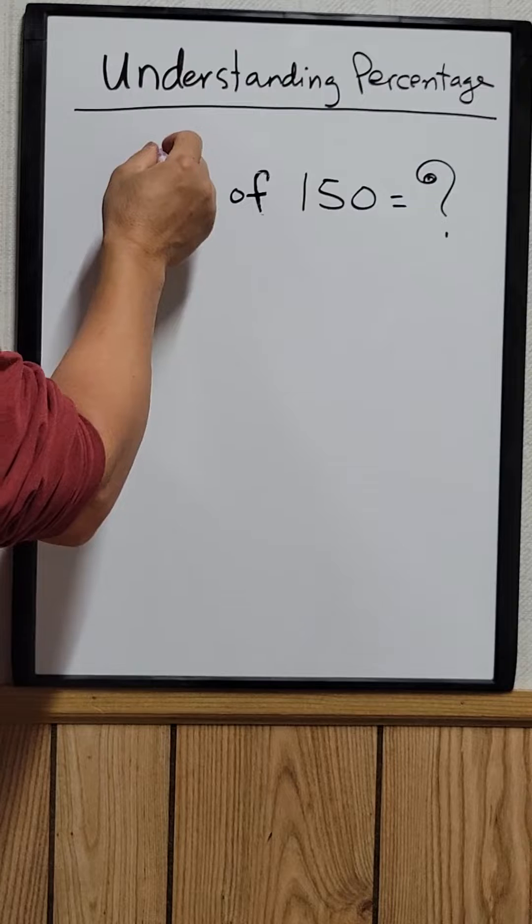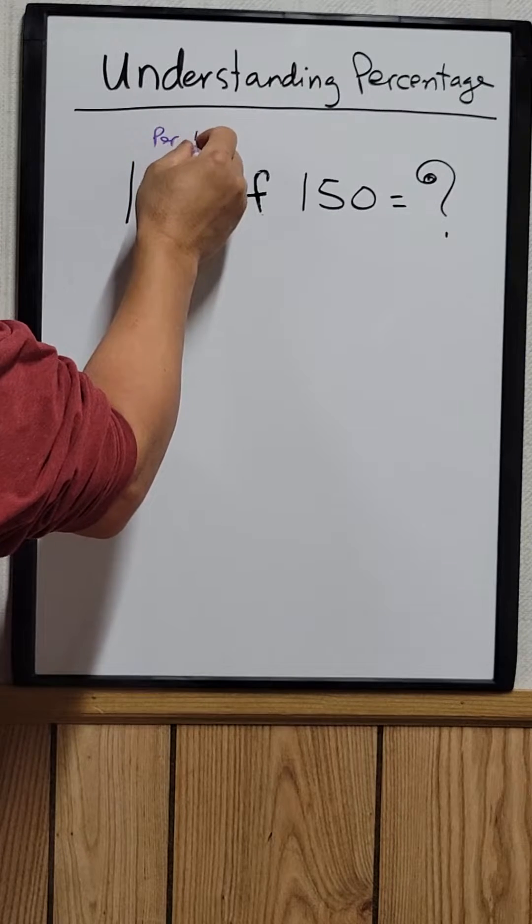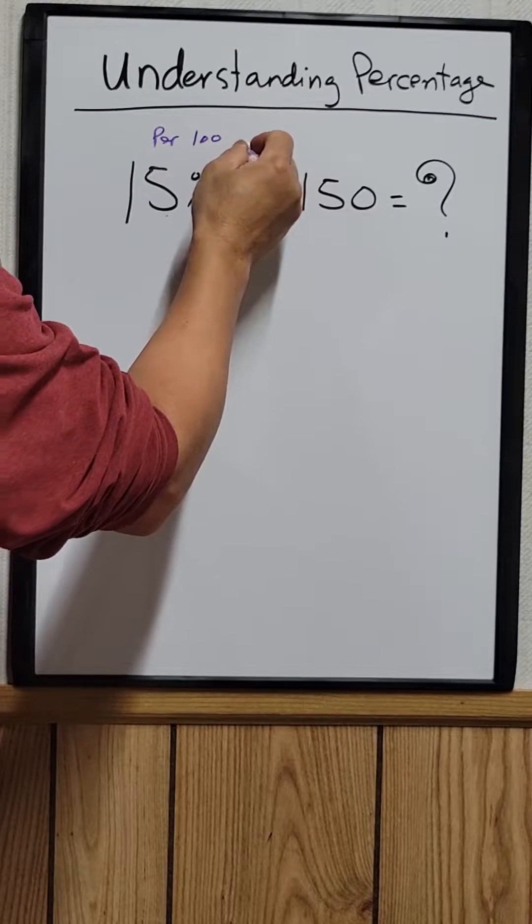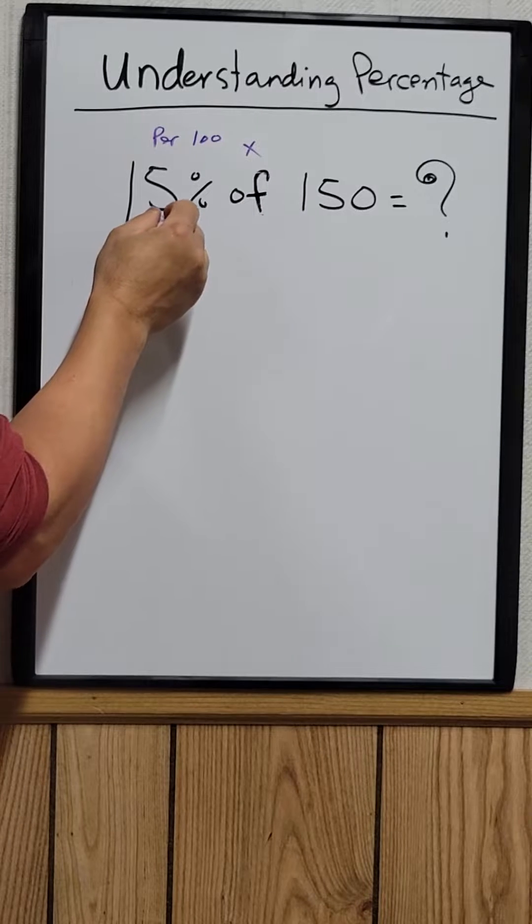The word percentage just means per 100, and the word of means times. So basically you can break this down.